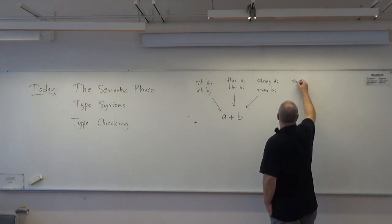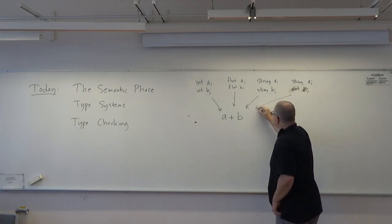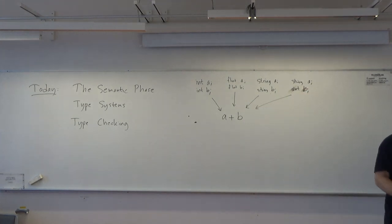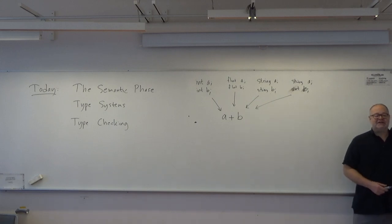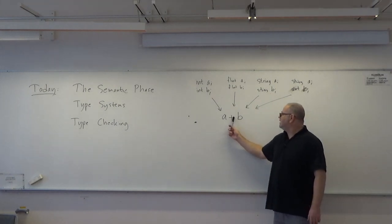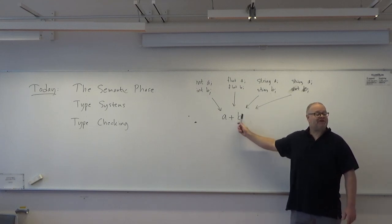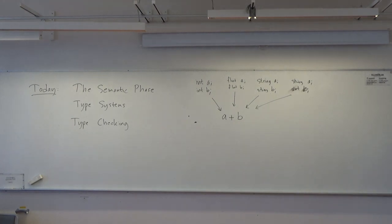If you have one thing as a string and the other one a number, it depends on the language. Can you take a string and add an integer? In some languages you can, and in some you can't. In languages where you can, B will first be converted to a string and then you concatenate the strings. Or if it's C, then something completely different happens.